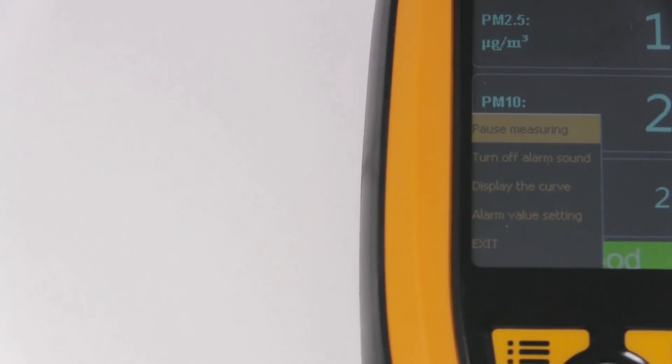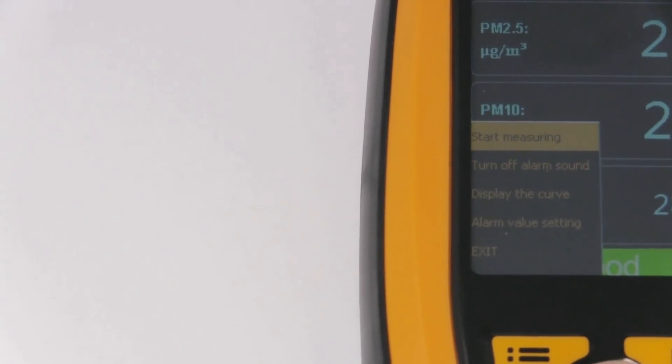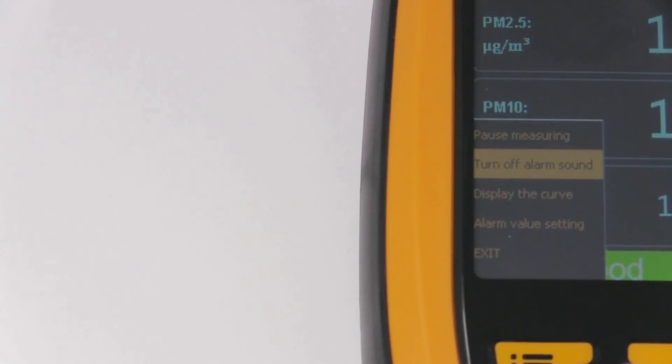An alarm value setting. You click on there to set the setting. It will inform you if it gets too high, too low. You can put the max.